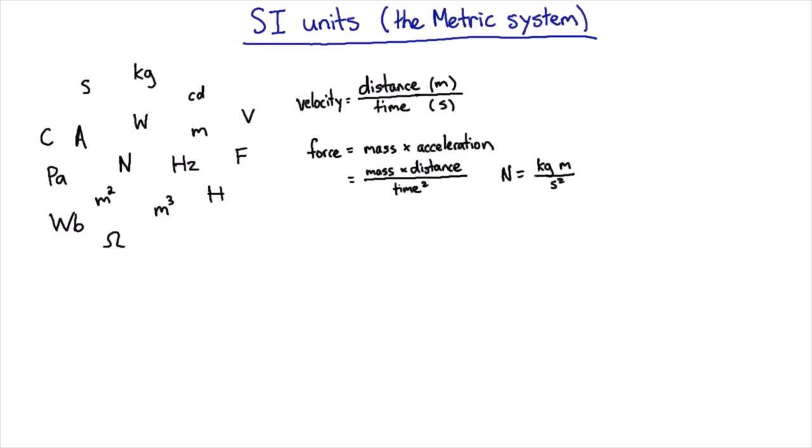And indeed, one newton is exactly one kilogram meter per second squared. So if I know that a force is a mass times an acceleration, then I can figure out that the unit for force must be a kilogram meter per second squared. And I don't necessarily even have to know that that's called a newton.